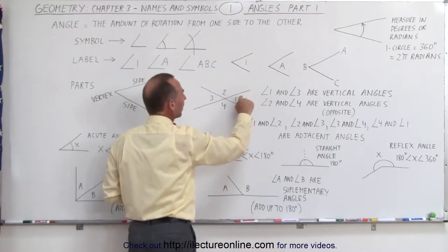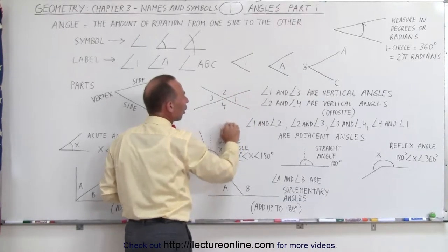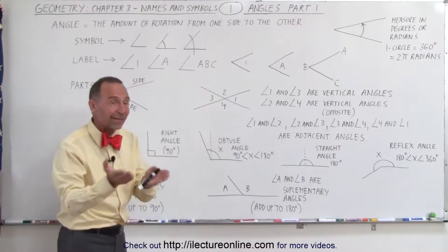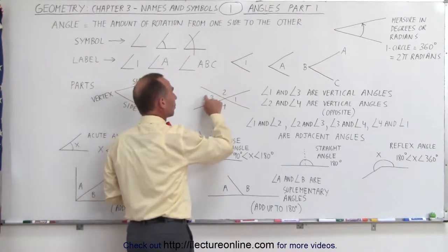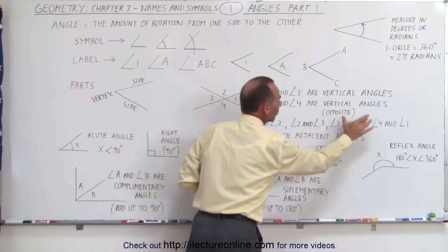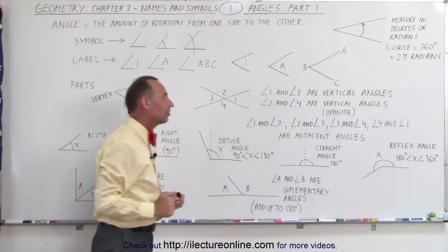Then also notice that we have angles that are side by side. They share a common side. So angles 1 and 2 are called adjacent angles. They are adjacent to one another, which means side by side. So are angles 2 and 3, 3 and 4, and 4 and 1. So these four pairs of angles are called adjacent angles.